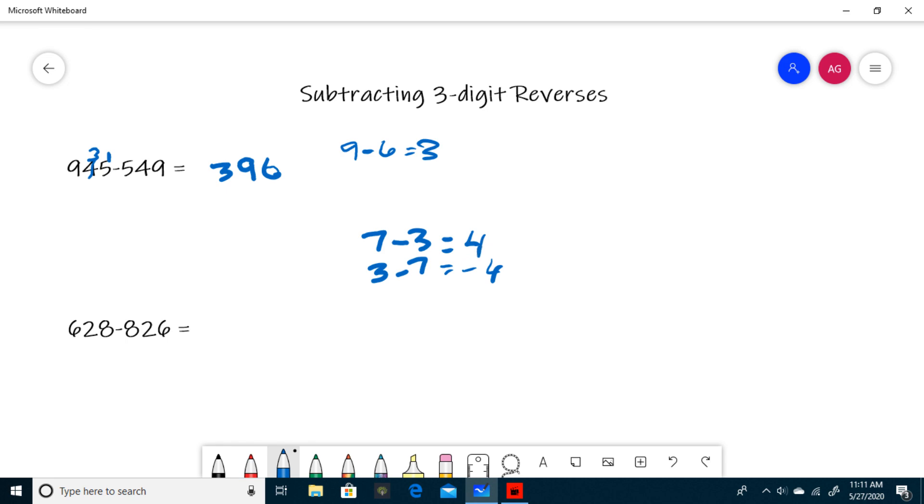So the insight here is that if you flip two numbers around in a subtraction equation, you're just going to get the negative of that answer. So what I can do is 826 minus 628, and then at the end just take the negative of that.